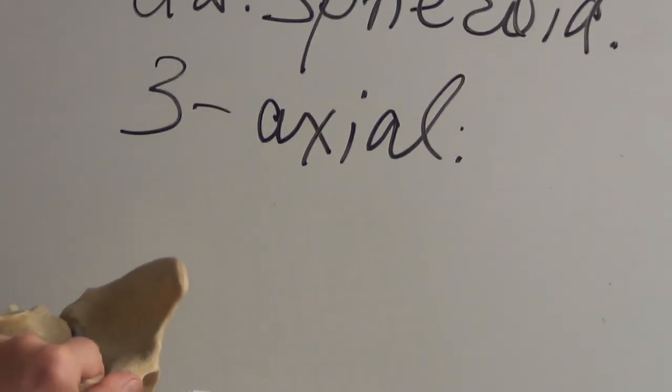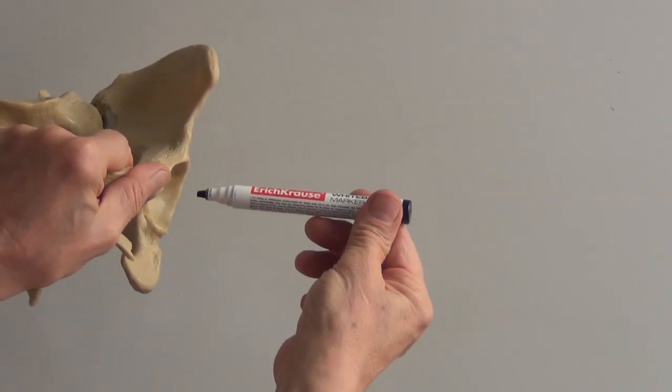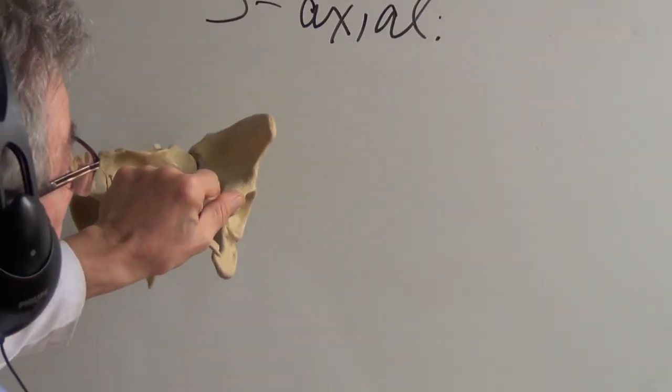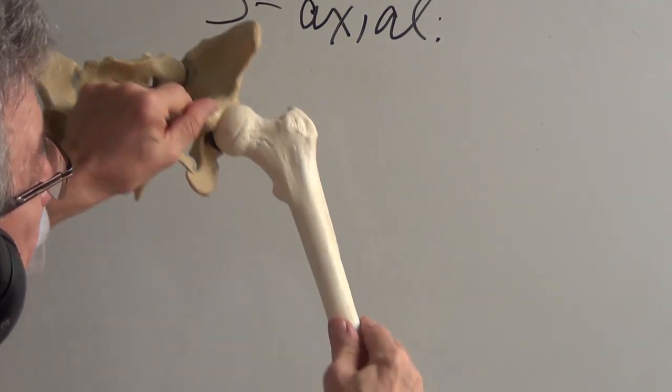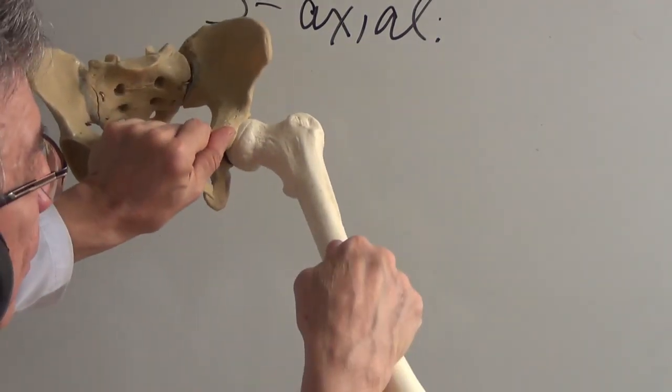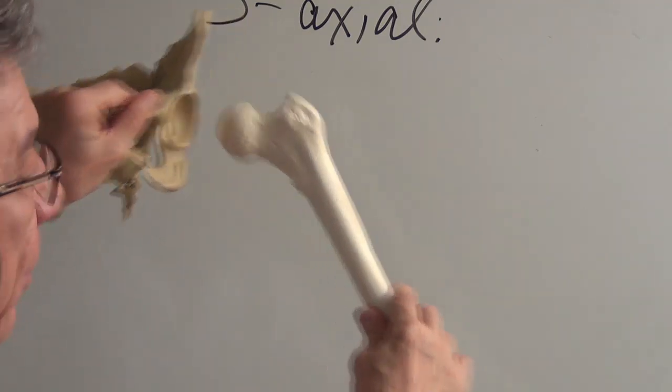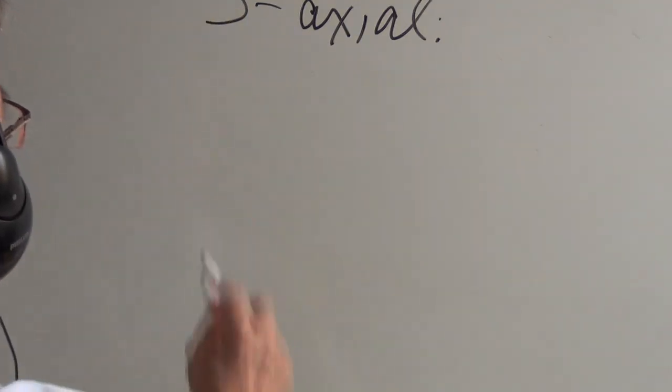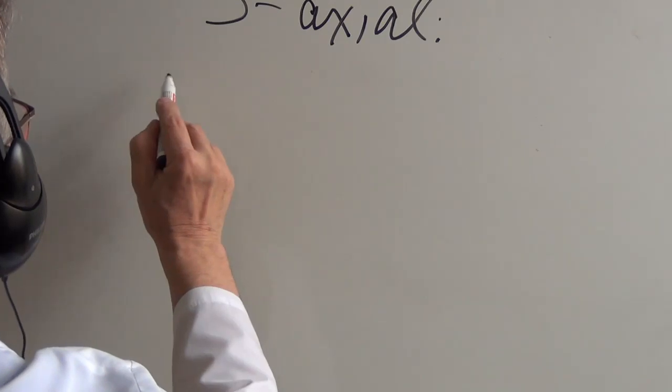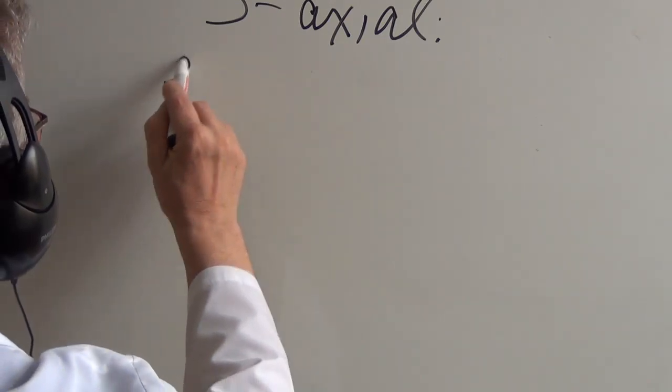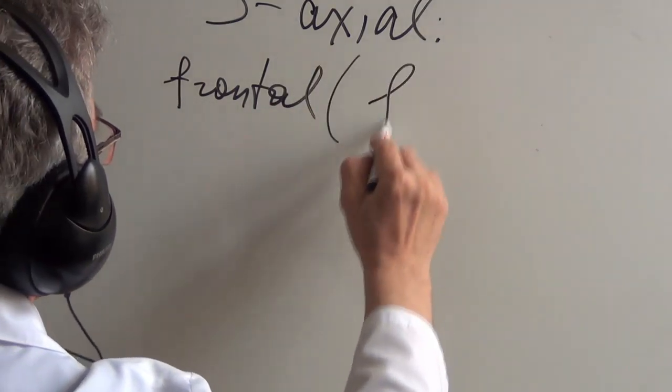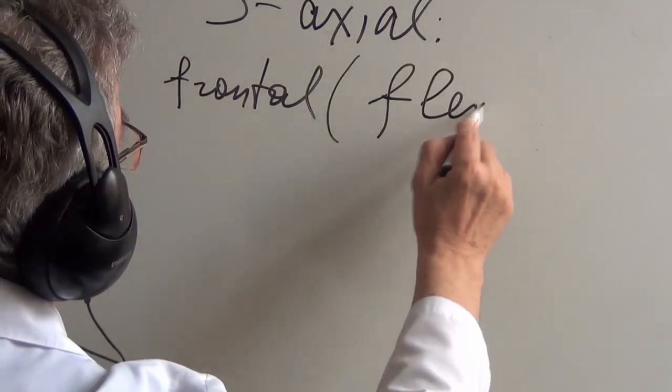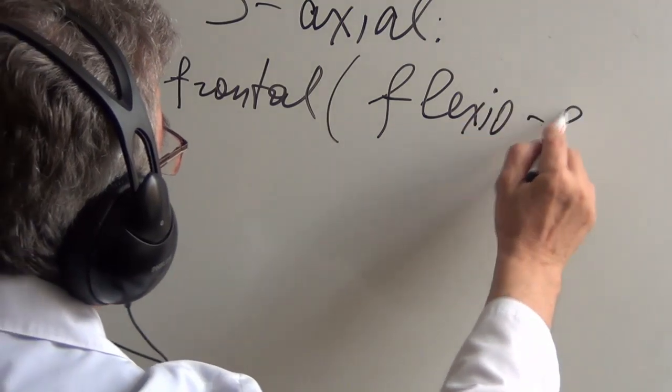Around this axis we can move this way and this way. It's flexio and extensio. So frontal axis - flexio, extensio.